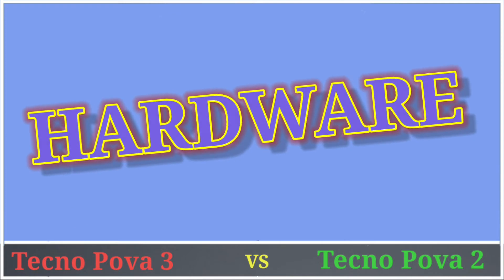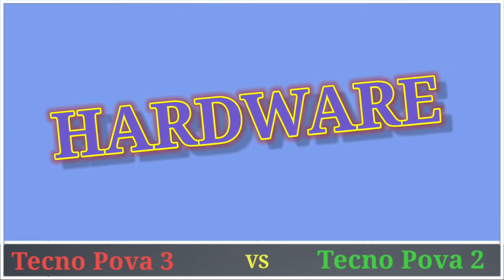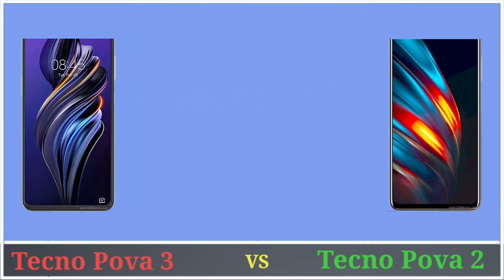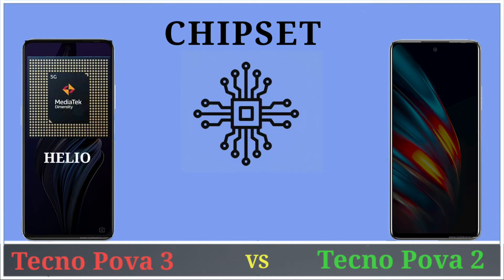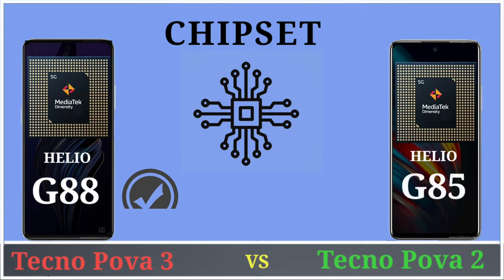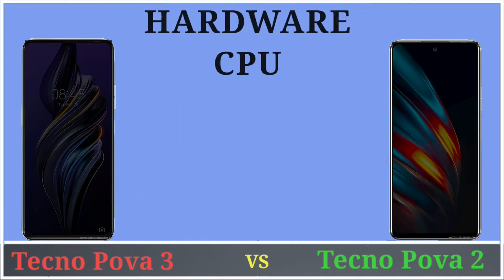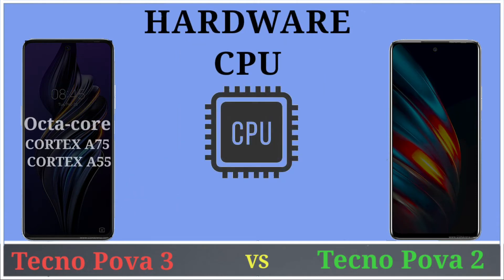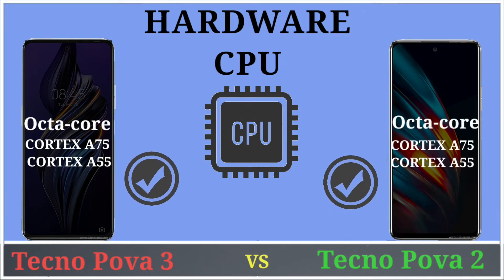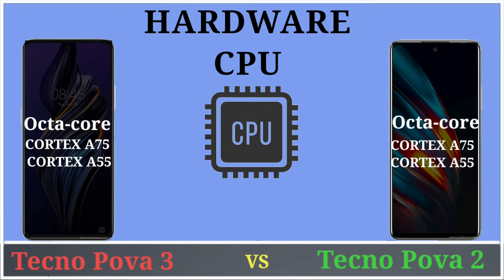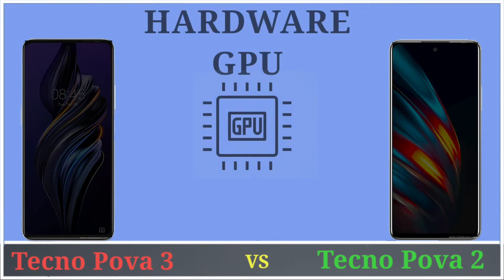Let's talk about hardware. Tecno Pova 3 comes with a Mediatek Helio G88 processor and Tecno Pova 2 comes with a Mediatek Helio G85 processor. CPU: Tecno Pova 3 is octa-core with Cortex-A75 and Cortex-A55 cores, and Pova 2 is also the same configuration.